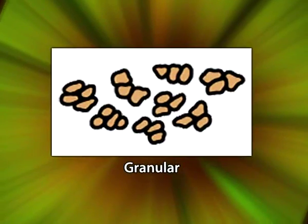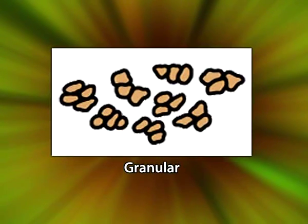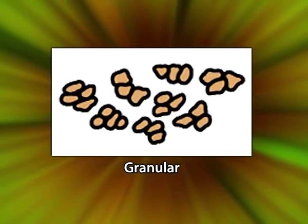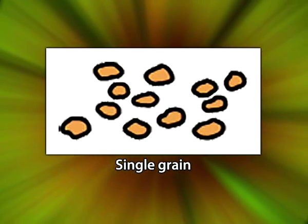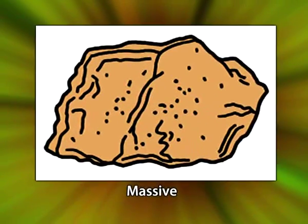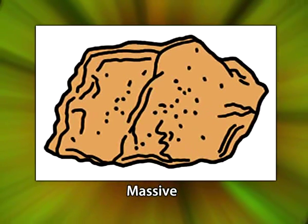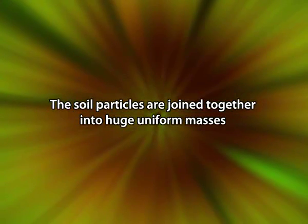In granular soil structure, the units are more or less spherical or polyhedral, bounded by irregular or curved faces. In single grain structure, the soil is structureless — soil particles exist as individual grains and do not form aggregates. Single grain soils are best exemplified by sandy soils. The last type is massive structure, which is also structureless without an apparent structure; soil particles are joined together into huge uniform masses.